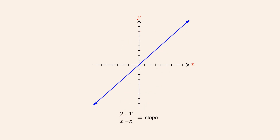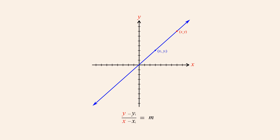Now, let's say we have a line with slope m and a point on that line with coordinates x1 and y1. If we use any other point on the line as the second point in the slope formula, the calculated slope will always be equal to m.